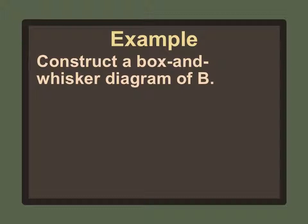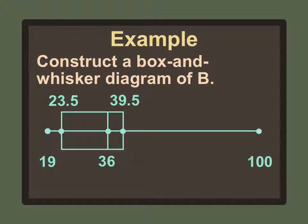Now the box and whisker diagram for B. The lowest number is 19 and the highest is 100. The median was 36, which is much closer to 19 than to 100. The upper quartile 39.5 is close to 36, so it goes near there. The lower quartile 23.5 is closer to 19. We draw the box around the upper and lower quartiles and put a hash mark at the median, 36.